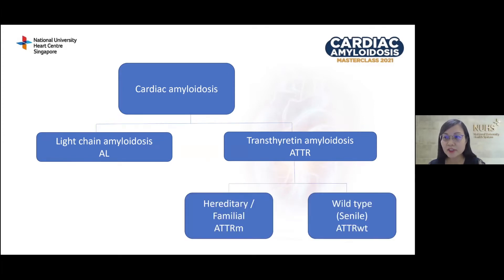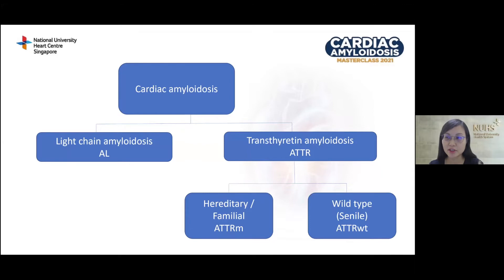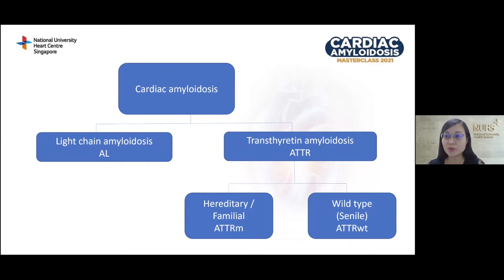We can further subclassify transthyretin amyloidosis into two groups depending on whether a genetic mutation is present in the TTR gene. If there is a genetic mutation, the patient has hereditary or familial transthyretin amyloidosis. If they do not have the genetic mutation, they are diagnosed with the wild type, also previously known as the senile type.